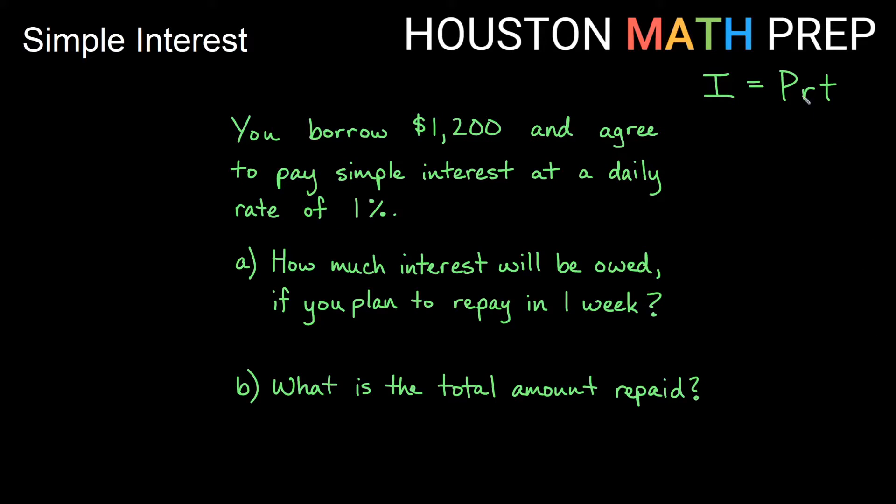Let's look at an example here. Simple interest equals P times R times T. Let's say that you borrow $1,200 and you agree to pay simple interest at a daily rate of 1%. So you're being charged 1% interest per day. We want to figure out how much interest will be owed if you plan to repay in one week. So this should tell us that one week, if we're paying interest per day, then our T is going to be seven days.